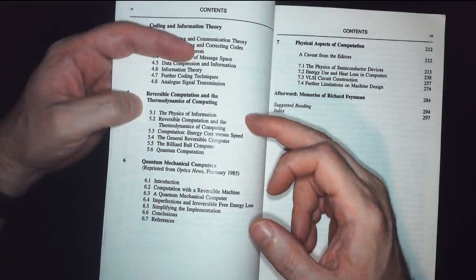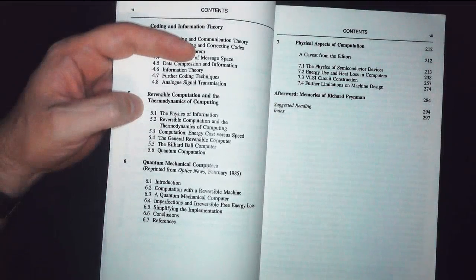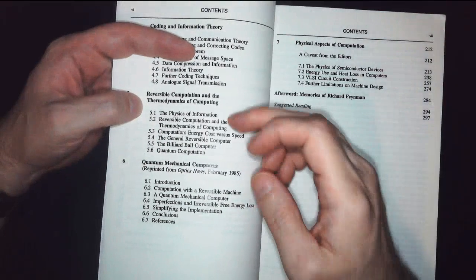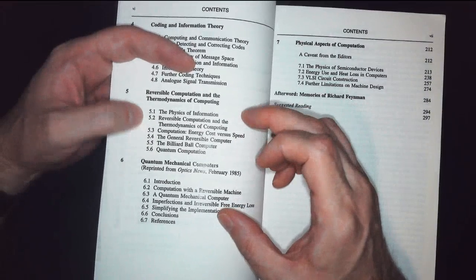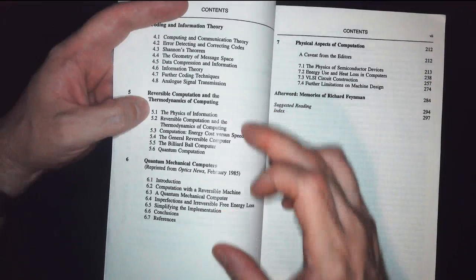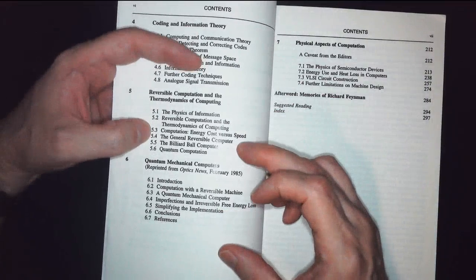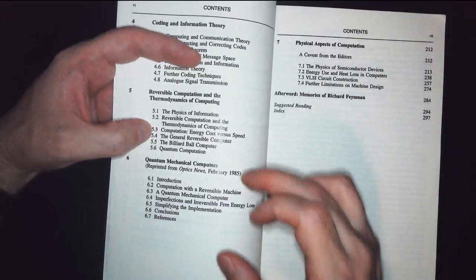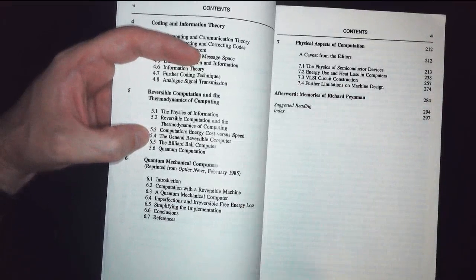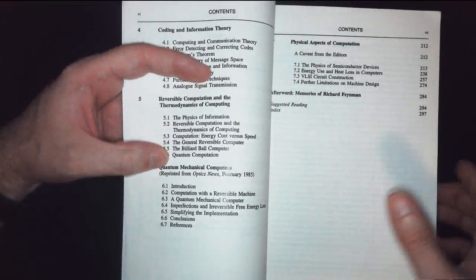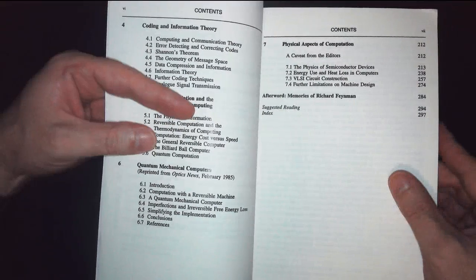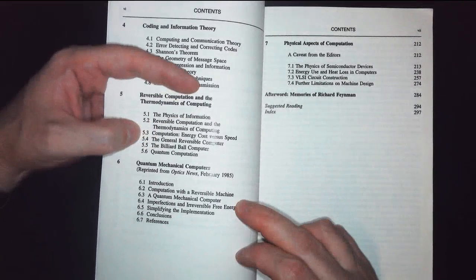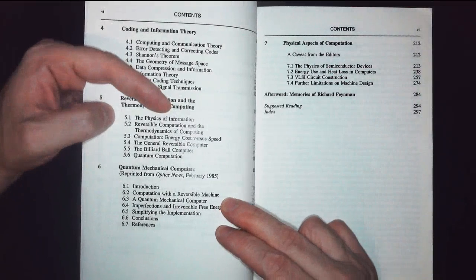Reversible computation in the thermodynamics of computing. I should have reread this. I would think that you can't have completely reversible computing when you're dealing with the physics of information and you're dealing with entropy and stuff like that. But apparently here you can have a reversible computer. And then you have the billiard ball computer, which I'd love to look up again because it's been a while since I read this. I read this sometime between 2008 and 2013.